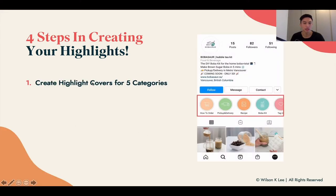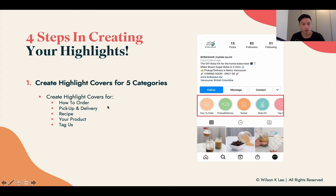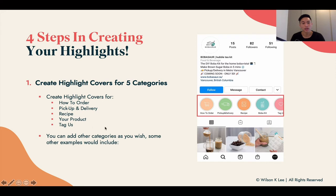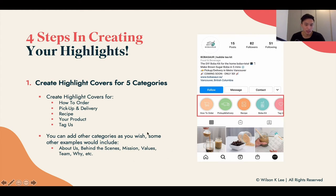Step one is to create the highlight cover for five different categories: how to order, pickup and delivery, recipe, your product, and tag us. These are the five covers I recommend for your food brand. You can add additional categories as you wish — some examples would be about us, behind the scenes, mission, values, team, and more. It really depends on your preference, but for this lesson we'll focus on these five categories.